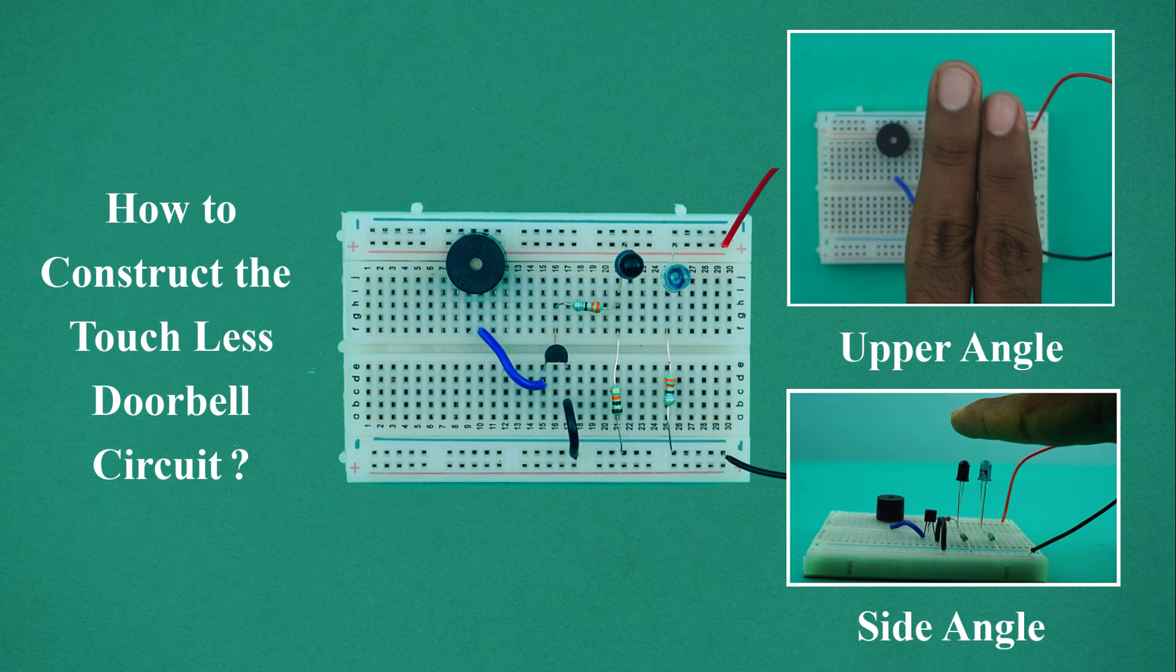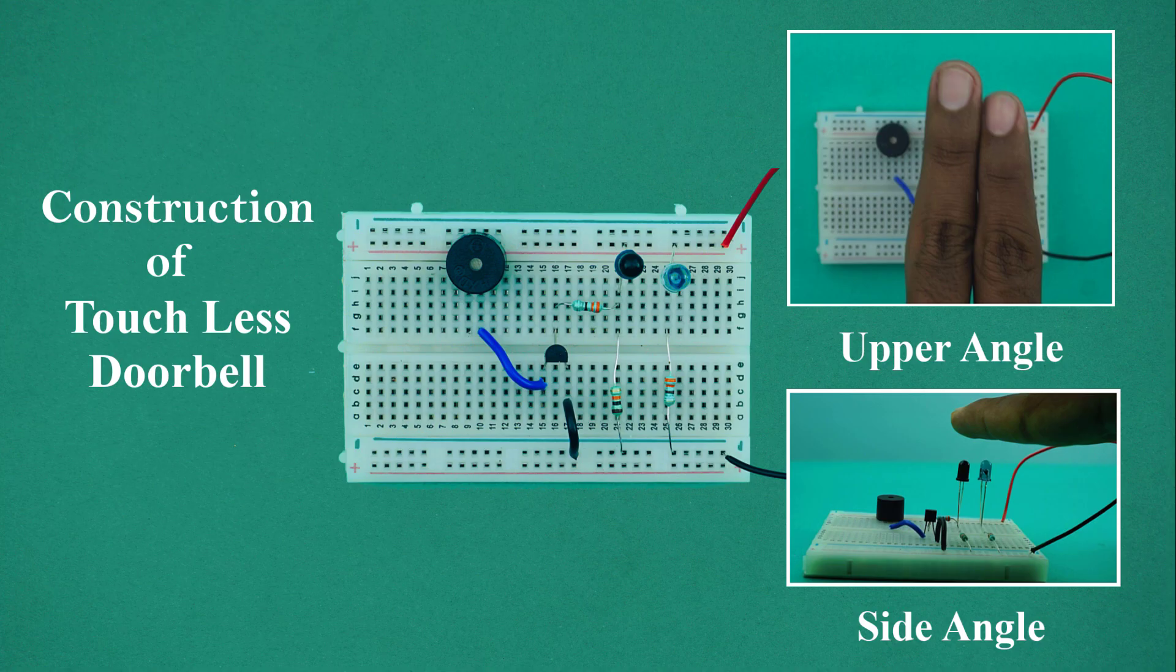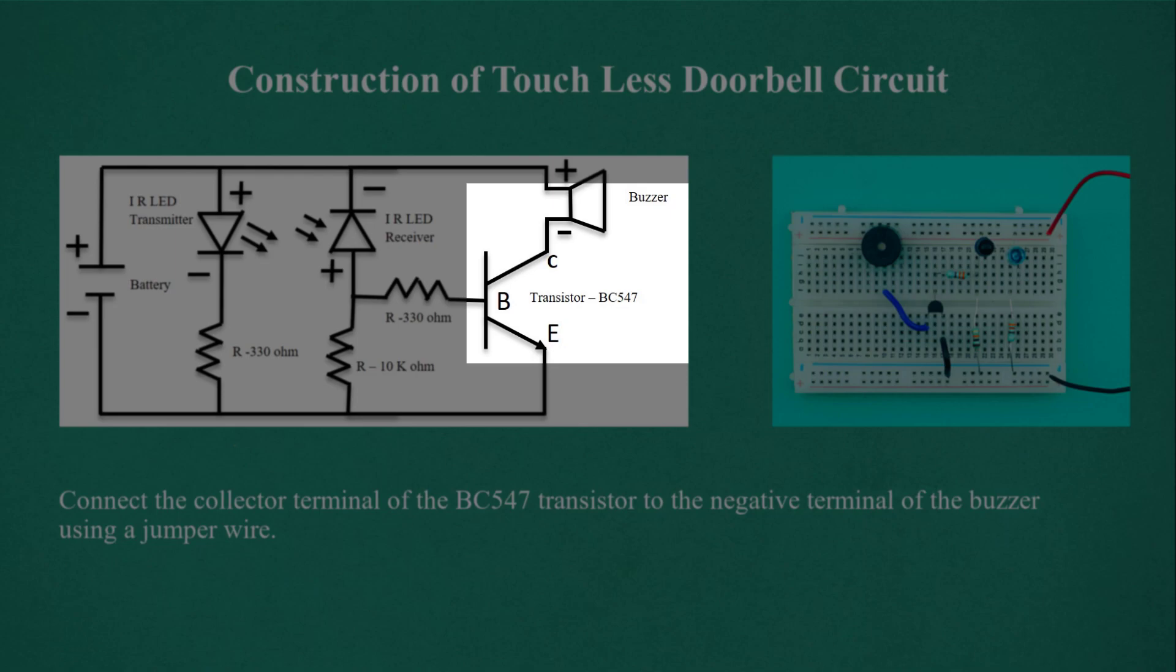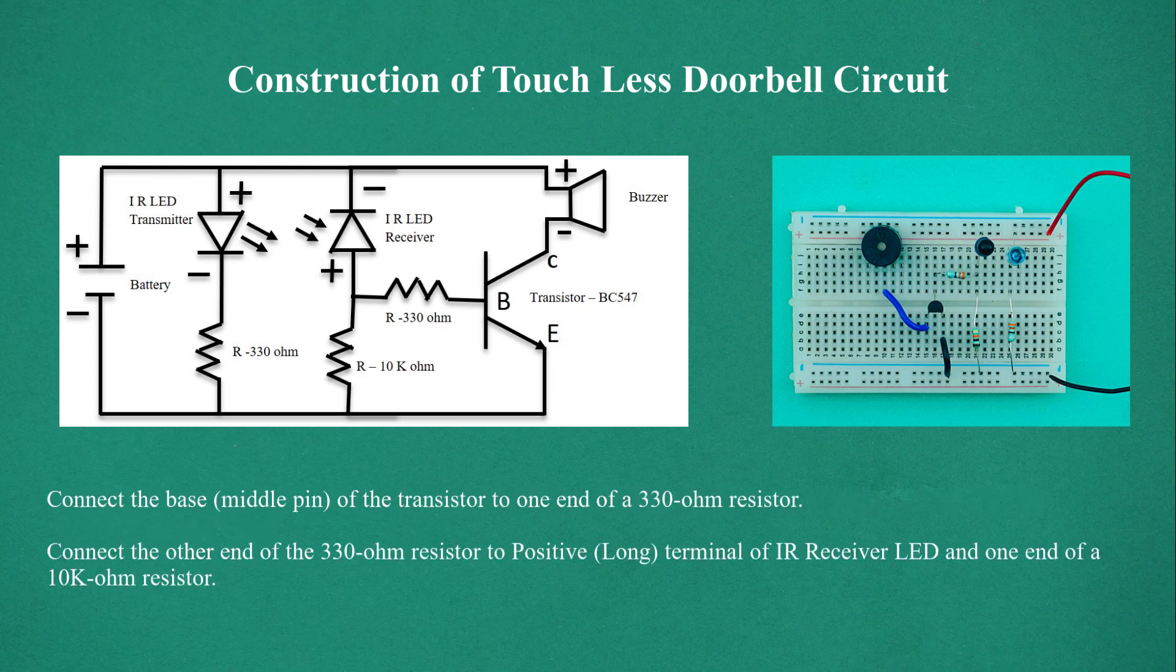How to construct the touchless doorbell circuit. Connect the collector terminal of the BC547 transistor to the negative terminal of the buzzer using a jumper wire.